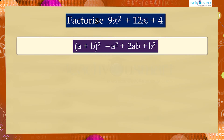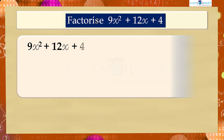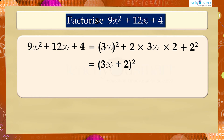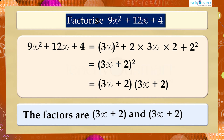Then by using the identity (a + b)² = a² + 2ab + b², we get: 9x² + 12x + 4 = (3x)² + 2 × 3x × 2 + 2² = (3x + 2)², or (3x + 2)(3x + 2). Therefore the factors are (3x + 2) and (3x + 2).